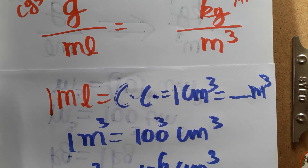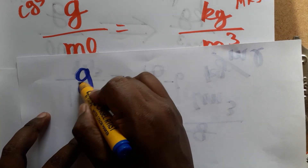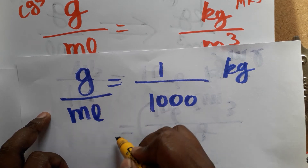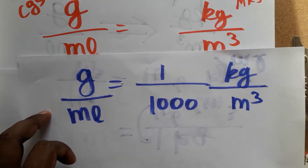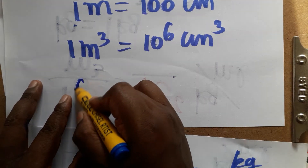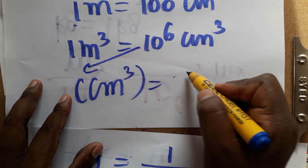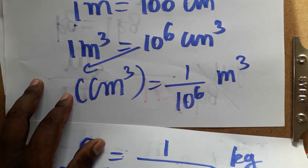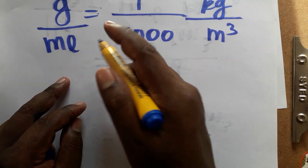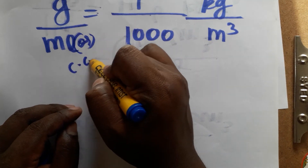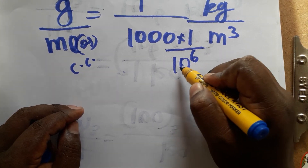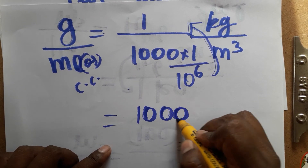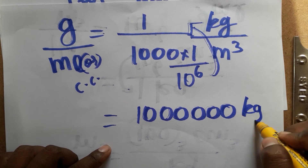Now combining both: gram to kilogram is 1/1000 kg, and mL is centimeter cube. For centimeter cube to meter cube, since 1 m³ = 10⁶ cm³, we have 1 cm³ = 1/10⁶ m³. When this denominator comes into the numerator of our fraction, the 10⁶ moves to the top, giving us 10⁶ in the numerator.